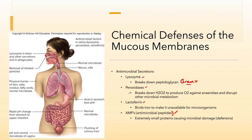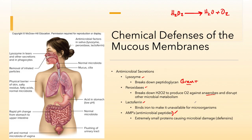Peroxidases break down hydrogen peroxide. Hydrogen peroxide is a byproduct of cellular respiration — a toxic waste product known as a reactive oxygen species. Hydrogen peroxide will be broken down into a water molecule and an oxygen gas molecule. Organisms that are disrupted by the presence of O2 — organisms that may be facultative or obligate anaerobes — will be disrupted by the presence of oxygen.